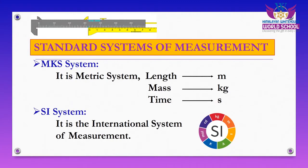The SI system contains more physical quantities than the previous systems. Before the SI system, only three quantities were discussed across all three other measurement systems. Now in the SI system, more quantities are included, making it much more useful. Next, I will introduce the measurement of some fundamental quantities — specifically length, mass, and time.